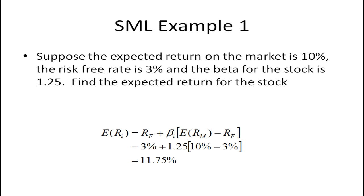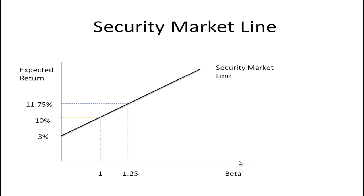Let's take a look at an example. Suppose the expected return on the market is 10% and the risk-free rate is 3%. If the beta of the stock is 1.25, the expected return is 3% plus 1.25 times (10% minus 3%), which equals 11.75%. If we graph this, we see an asset with a beta greater than the market's, earning an expected return higher than the market — 11.75% for taking on a beta of 1.25.